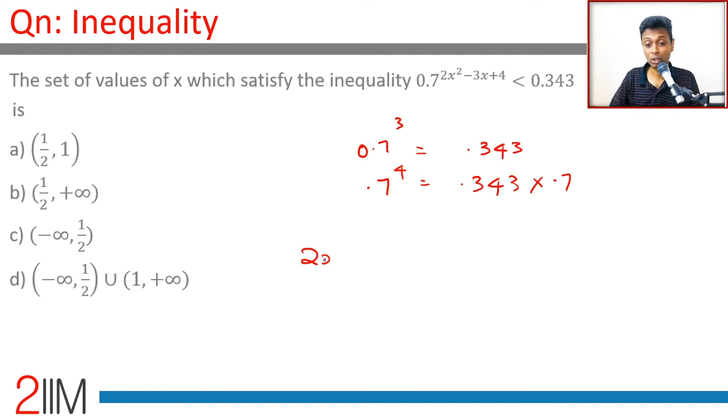If the expression 2x² - 3x + 4 equals 3, then we have equality. But since we need less than 0.343, the exponent should be greater than 3. Why? Because 0.7 raised to higher powers keeps shrinking. When the exponent is 3, we get 0.343; if it's higher than 3, it shrinks to even lower numbers. So 2x² - 3x + 4 > 3.